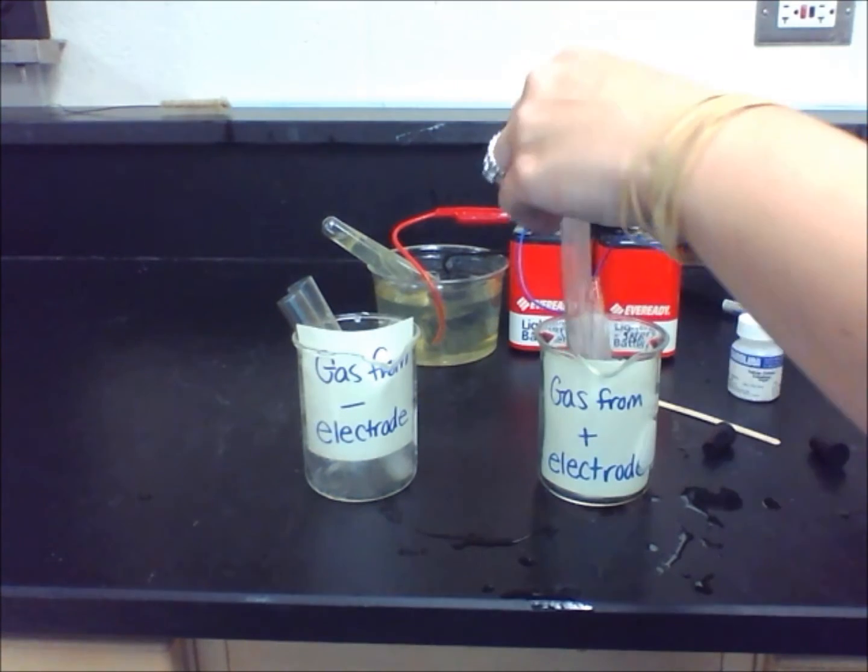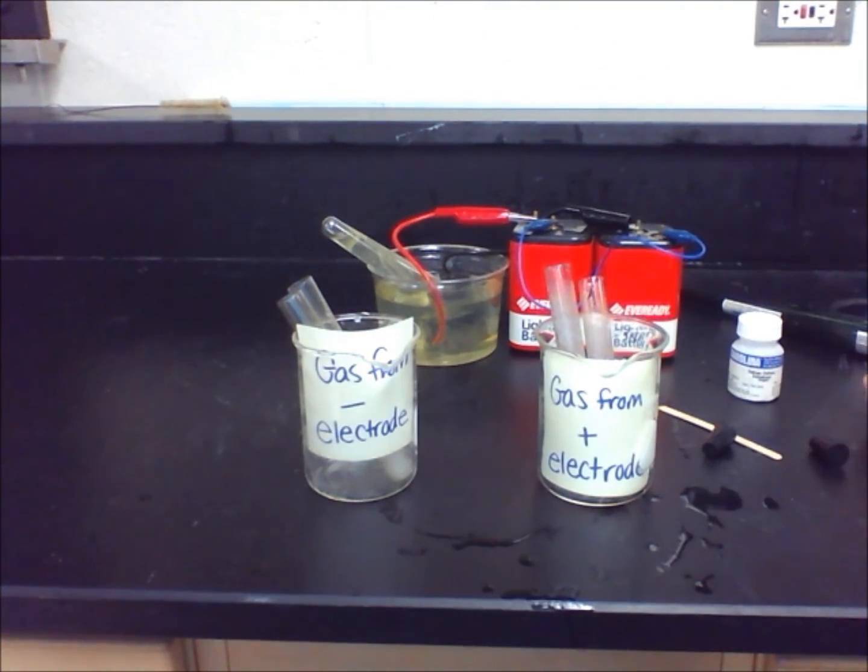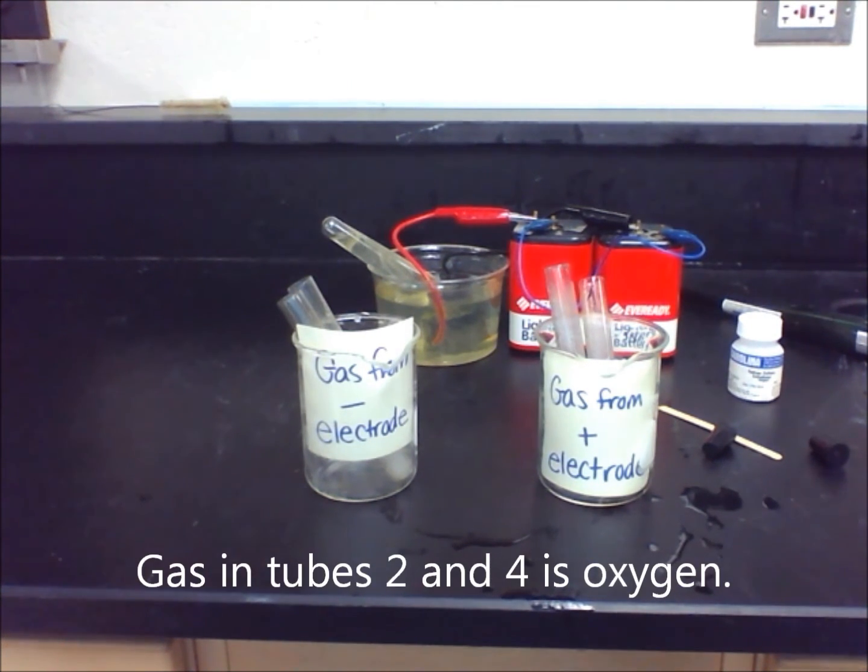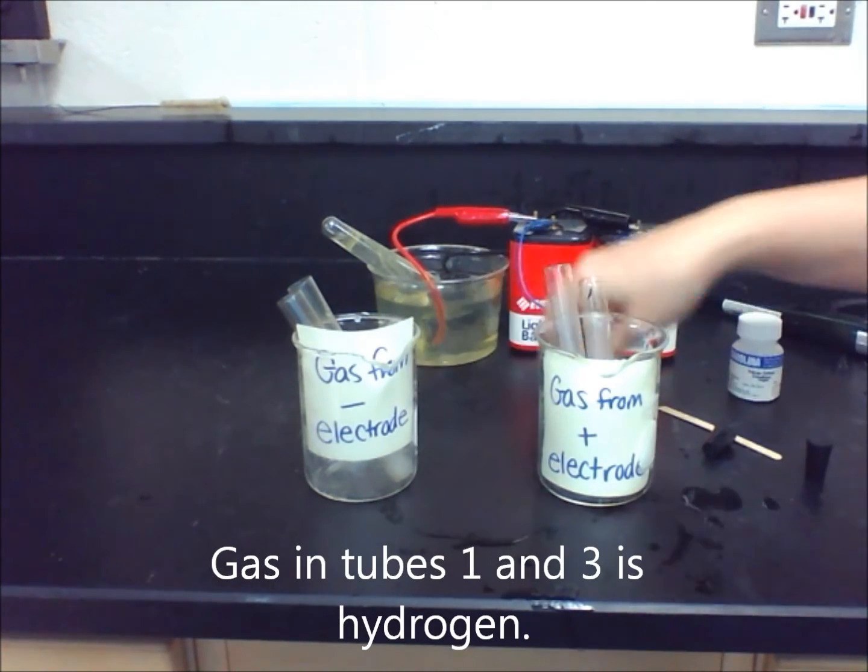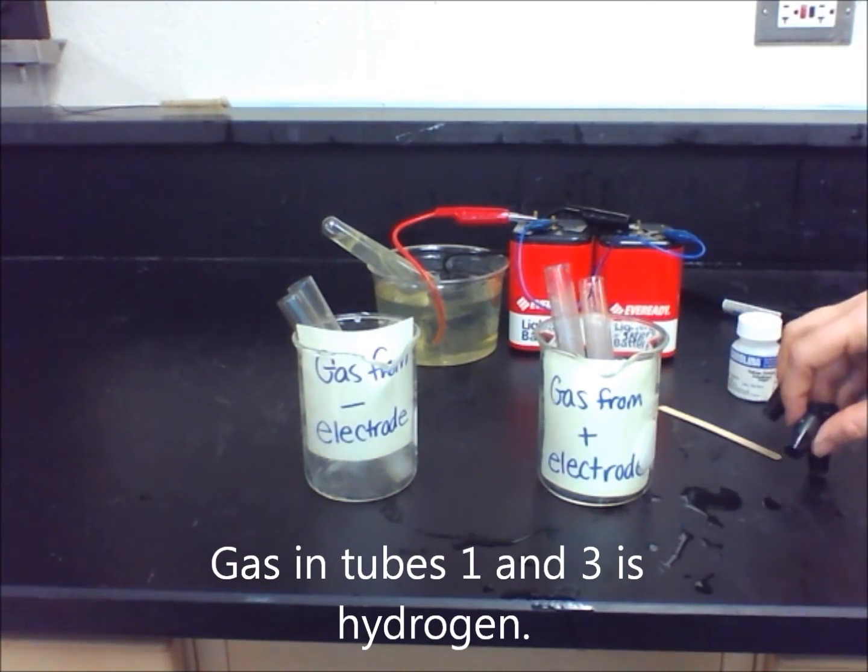Using the observations in tubes 2 and 4 for the gas produced above the positive electrode, we can tell that it is oxygen because it didn't make a noise but helped the fire to burn. Using the observations in the table about the gas in tubes 1 and 3, you can tell the gas is hydrogen because it was highly reactive and popped but did not help the fire to burn.